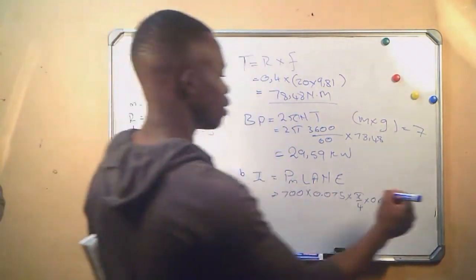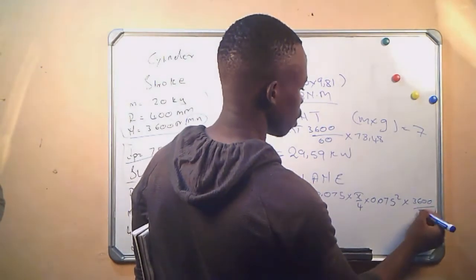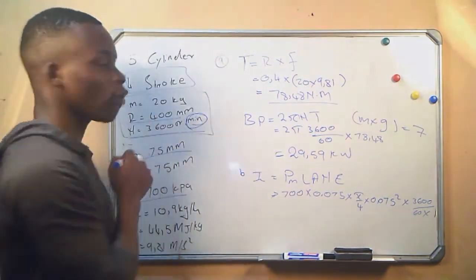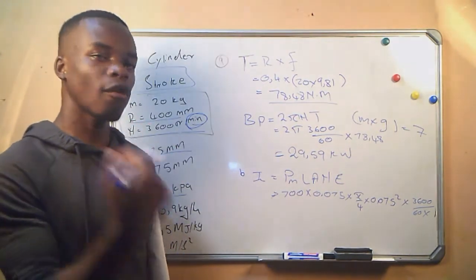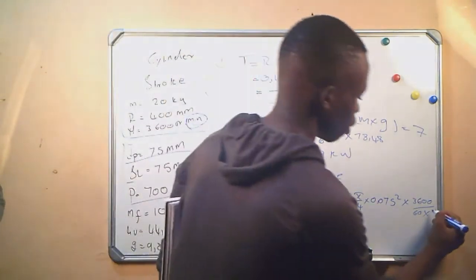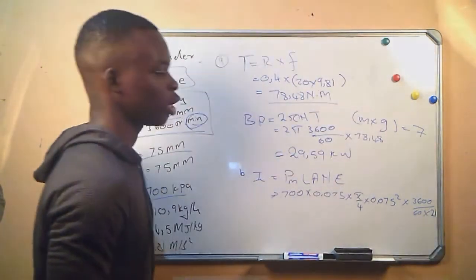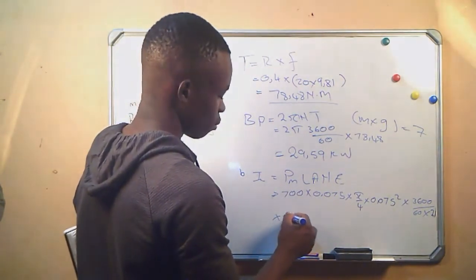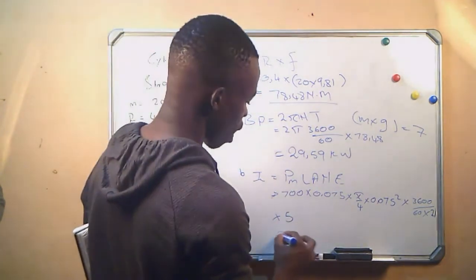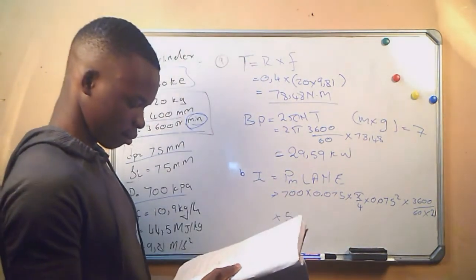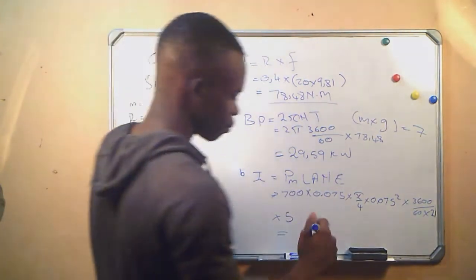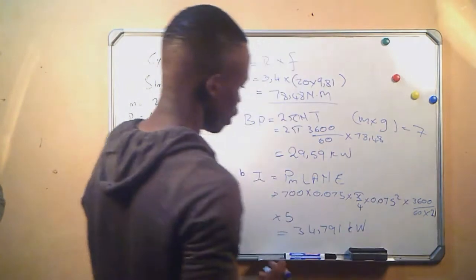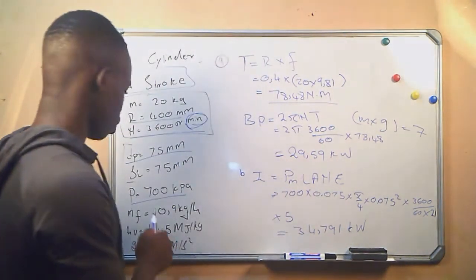The rotational frequency is 3600 divided by 60. Since it is in per minute, we want it in per second. And we are dealing with a four-stroke engine, meaning two revolutions of the crankshaft for all these cycles to be completed, so we divide by two. Times the number of cylinders, which is five. This gives us 34.791 kilowatts. It's in kilowatts because the mean effective pressure is in kilopascals.